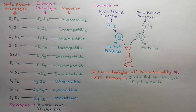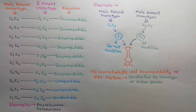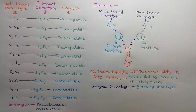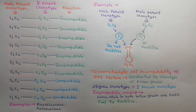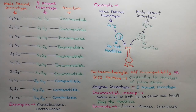The second type is gametophytic self incompatibility, also called the GSI system. If self incompatibility is controlled by the genotype of the pollen grain instead of the male parent plant, it is called the GSI system. Stigma always represents the genotype of the female parent plant. If the allele present in the pollen grain is also present in the pistil of the female parent, then the pollen grain fails to affect fertilization. GSI is quite common in families like Liliaceae, Gramineae, and Solanaceae.